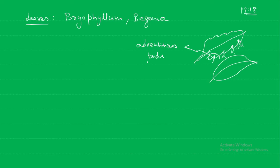We saw three types: vegetative propagation by roots, by stem (under stem there are different modifications), and by the modification of leaves. So three types of natural vegetative propagation. We will see some questions — learning milestone, fill in the blanks — I will ask specific students, you can answer.